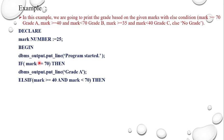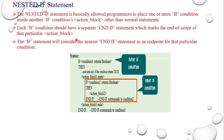Nested IF is another statement that allows programmers to place one or more IF conditions inside another. Each condition should have a separate END IF statement which marks the end of scope for that particular action block. The syntax looks like nested IF in C language — IF condition boolean THEN action block with another inner IF condition THEN action block, END IF, END IF — and so on.